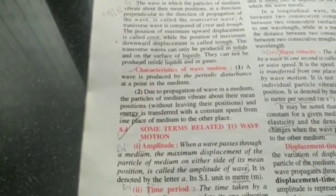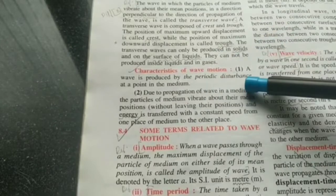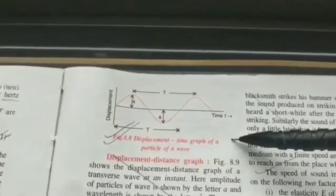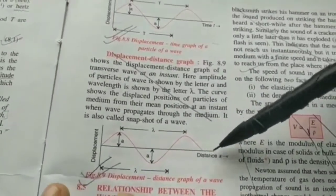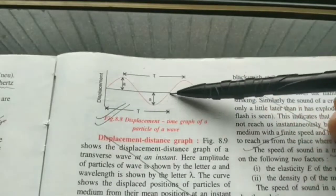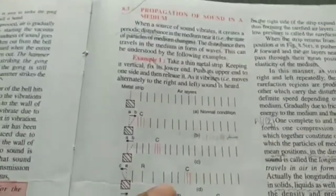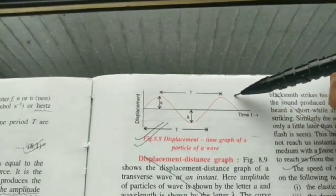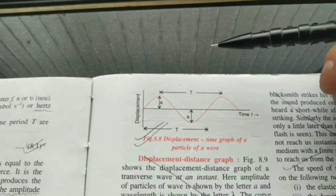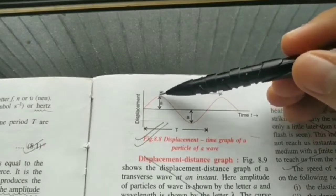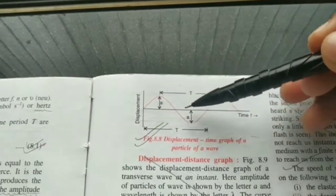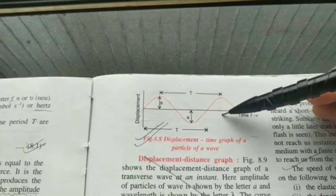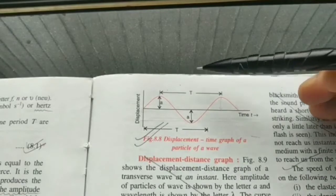Now, characteristics of wave motion: it's produced by periodic disturbance, and due to the propagation of the wave, energy is transferred at a constant speed. Let's understand some terms. This is a displacement-time graph, and this is a displacement-distance graph — you have to draw both diagrams. We represent the sound wave as a transverse graph just to understand its properties mathematically. The height of the peak is called amplitude — the maximum displacement of a particle of the medium from its mean position. The mean position is the middle line, the x-axis. Amplitude is measured in meters.